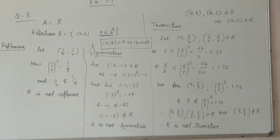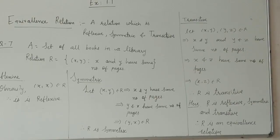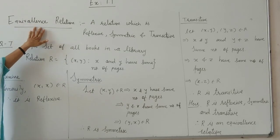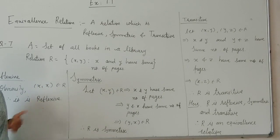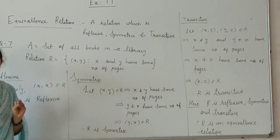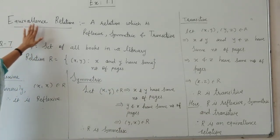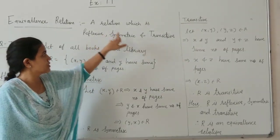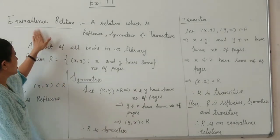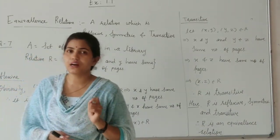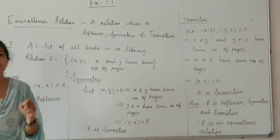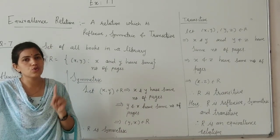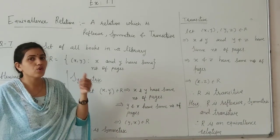Now we will see the next question. The next question depends on the equivalence relation. A relation which is reflexive, symmetric, and transitive is called an equivalence relation. So students, whenever in the exam they ask you to prove that the given relation is an equivalence relation or not, you have to check all three: reflexive, symmetric, and transitive. If any one of the properties does not hold, then it is not an equivalence relation.